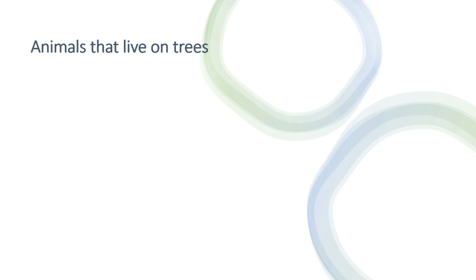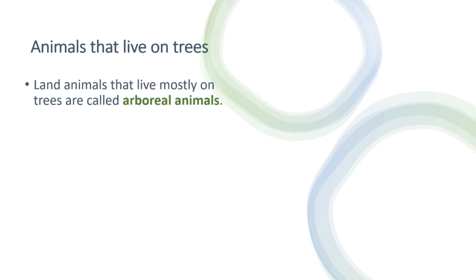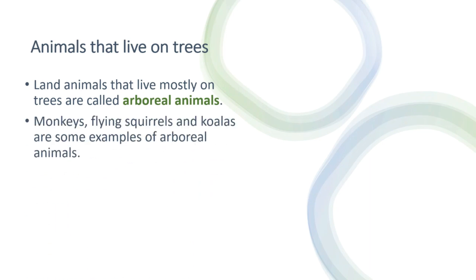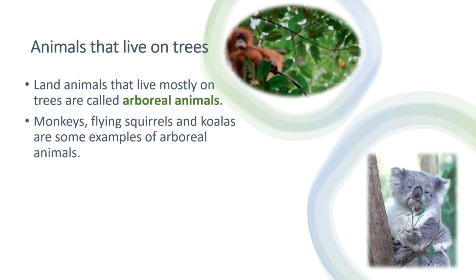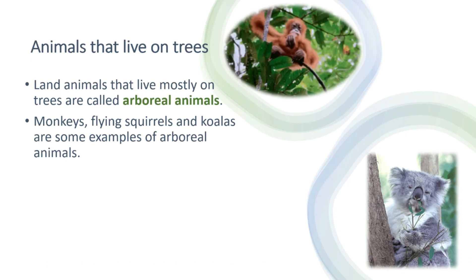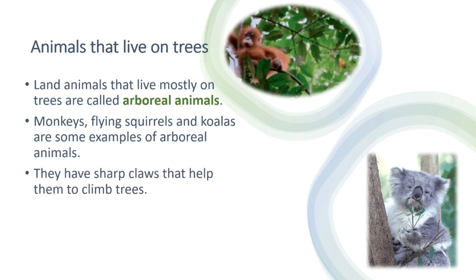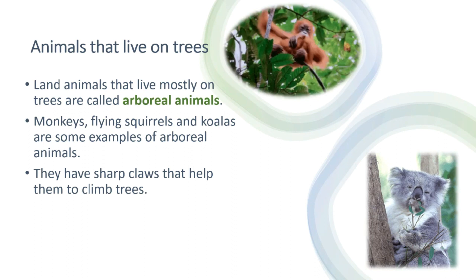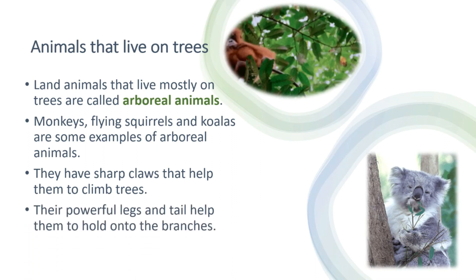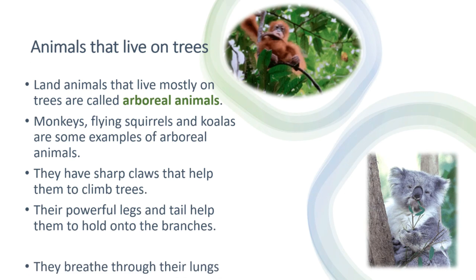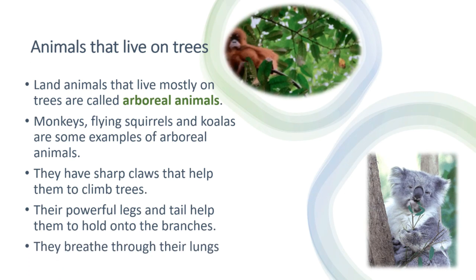Land animals that live mostly on trees are called arboreal animals. Monkeys, flying squirrels and koalas are some examples of arboreal animals. They have sharp claws that help them to climb trees. Their powerful legs and tail help them to hold onto the branches. They breathe through their lungs.